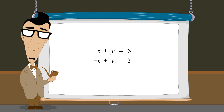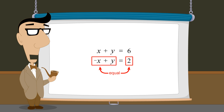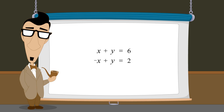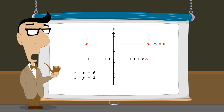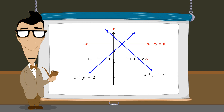Since both sides of the second equation are equal and are therefore the same thing. However, this does not tell the whole story, since adding two equations leads to an equation whose graph is different from either of the original equations. In this lecture, we will more closely examine what happens when two equations are added and why this procedure works for the elimination method.